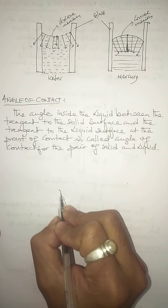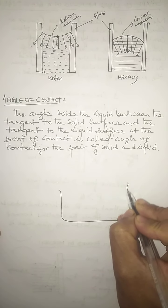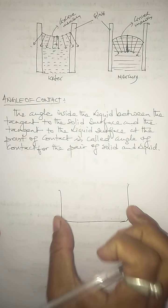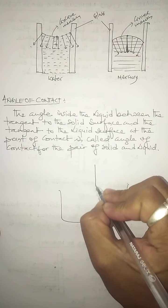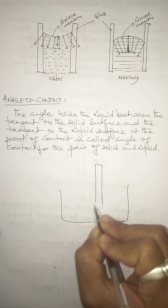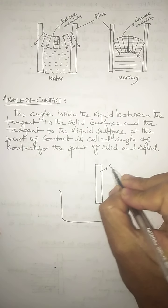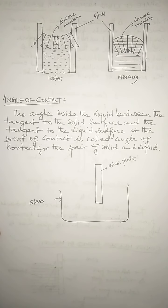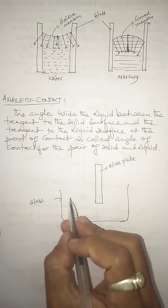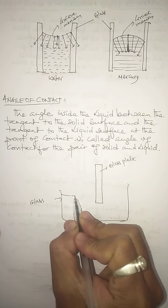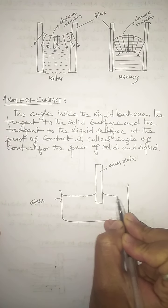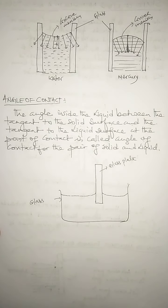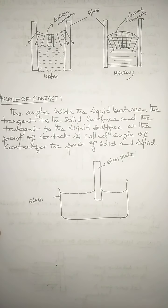To understand the angle of contact, let me show a diagram. Consider a beaker filled with water, and I place a glass plate in the middle of the beaker. This is a glass plate and the beaker is also made of glass. The meniscus formed by the water in contact with the glass is a concave meniscus.